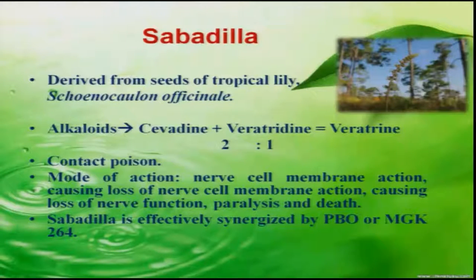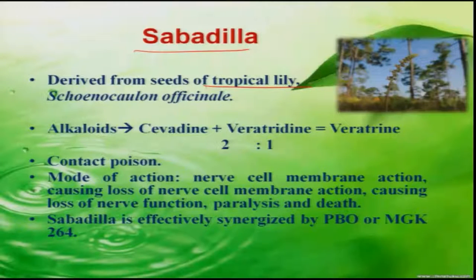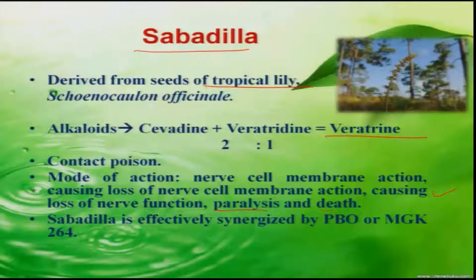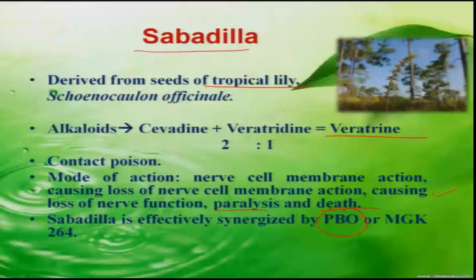Another botanical product is sabadilla, which is derived from seeds of tropical lily. The principal insecticidal property is veratrine. It acts as a contact poison, affecting the insect nervous system and bringing about paralysis and death. Sabadilla can be effectively synergized by mixing it with PBO, that is piperonyl butoxide.